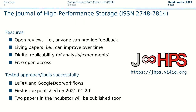Another activity is the Journal of High Performance Storage, which has an ISSN number. It has certain features that distinguish it from other journals in the field. For example, it has open reviews — meaning anyone can provide feedback, and this feedback is publicly released after a paper is accepted, so reviewers are encouraged to provide constructive and fair feedback. It also has living papers, meaning published articles can improve over time with minor extensions becoming new versions.